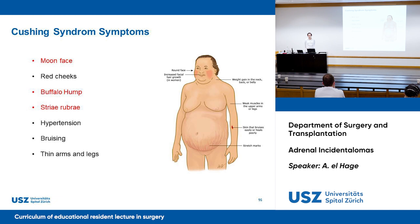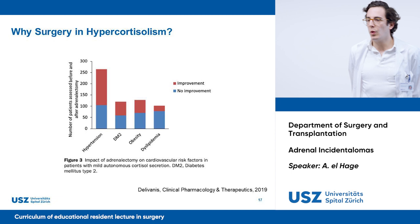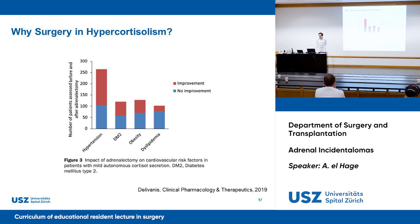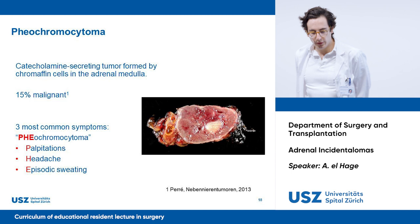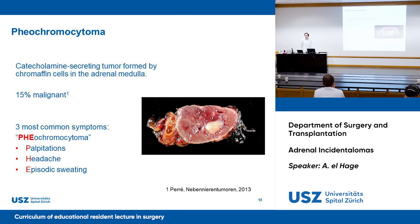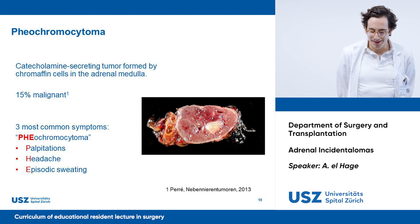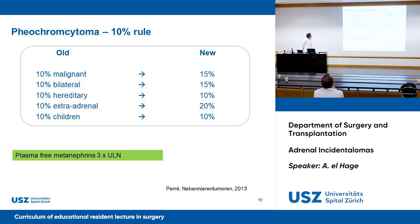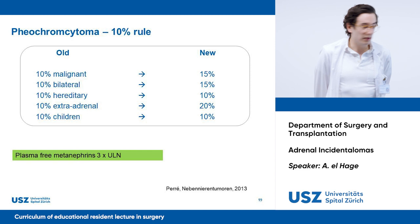Why do we operate these patients? A study from Delivanis has shown improvement in cardiovascular risk factors in patients who undergo adrenalectomy for hypercortisolism. Now, pheochromocytomas — these are catecholamine-secreting tumors in the medulla. Around 15% are malignant. For symptoms, just take the first three letters PHE of pheochromocytoma: palpitations, headaches, and episodic sweating. The 10% rule is not so true anymore: recent studies show 15% are malignant, 15% are bilateral, 20% are extra-adrenal, and for the other two categories the 10% rule still applies.